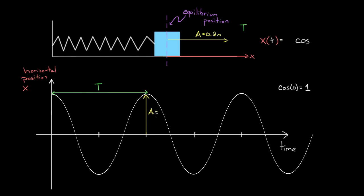Let's say our amplitude for a particular simple harmonic oscillator happened to be 0.2 meters. That would mean I could represent this with 0.2 meters—this doesn't even make it to one. So if I just left this as cosine, that would say this thing is going to get as big as one at some point, and that's a lie. This thing only gets as big as 0.2.